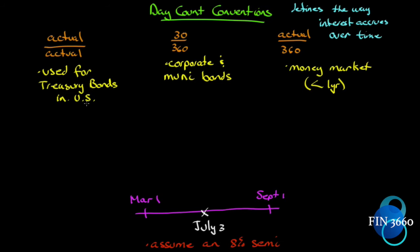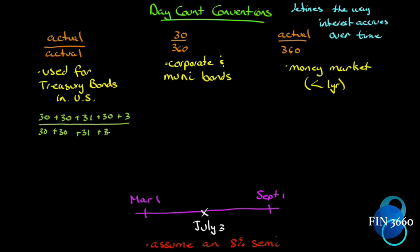Under Actual/Actual, we count the actual number of days from March 1st to July 3rd: 30 days left in March, 30 in April, 31 in May, 30 in June, and 3 days in July — giving 124 days. The reference period from March 1st to September 1st is 184 days. So accrued interest is (124/184) × $4.00 = $2.6957.